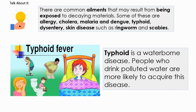Typhoid fever is characterized by onset of high fever, diarrhea, vomiting, and headache. Typhoid is a waterborne disease. People who drink polluted water are more likely to acquire this disease.